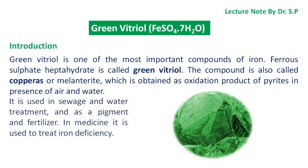Green vitriol is one of the most important compounds of iron. Ferrous sulfate heptahydrate is called green vitriol. The compound is also called copperas or melanterite, which is obtained as an oxidation product of pyrites in the presence of air and water. It is used in sewage and water treatment, as a pigment and fertilizer, and in medicine it is used to treat iron deficiency.